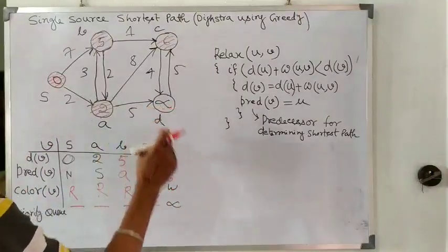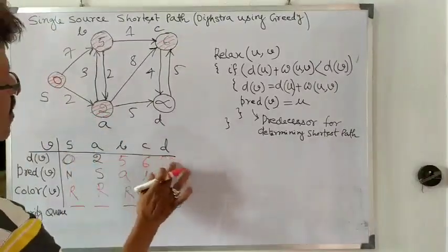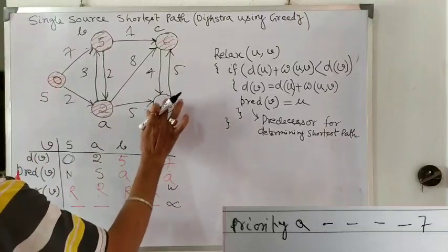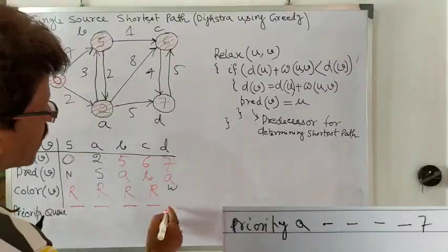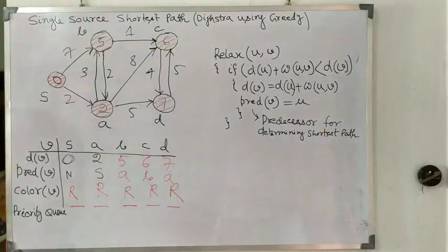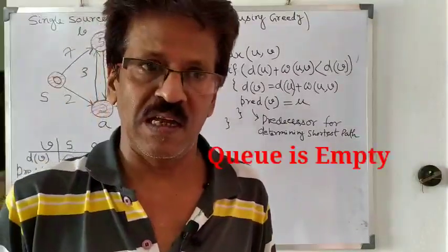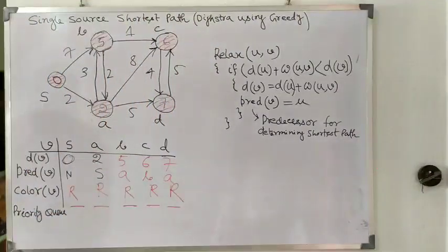That means we can reach from node A to D and the updated value is 7. So we rearrange this value — D(D) is updated as 7. The queue is now empty and this node is colored red. After this, we can see that the entire priority queue set is empty. Within the for loop, we marked all the nodes and their corresponding values.